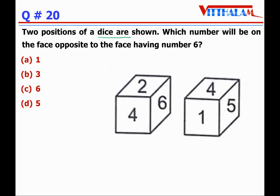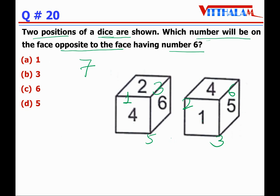Question 20: Two positions of a die are shown. Which number will be on the face opposite to the face having number 6? Remember that the sum of opposite faces of a regular die is always 7. So the pairs are: 4 and 3, 6 and 1, 5 and 2. Therefore the opposite side of 6 will be 1, and the answer is A.